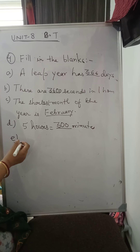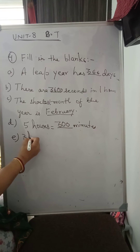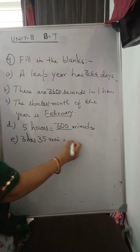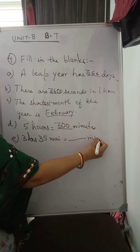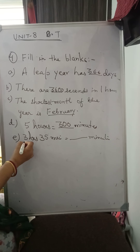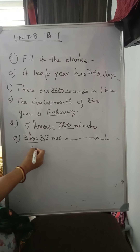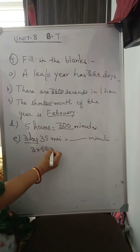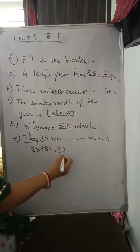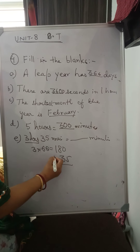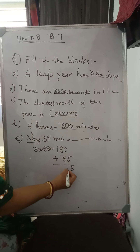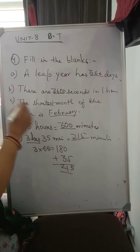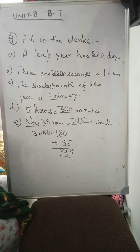Now E: Three hours thirty-five minutes is equal to how many minutes? Three into sixty is one hundred eighty, plus thirty-five. So it is two hundred and fifteen minutes.